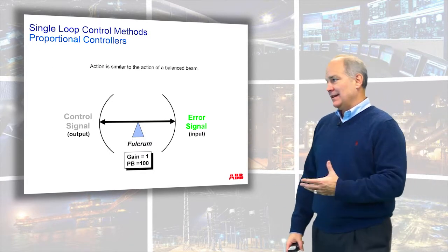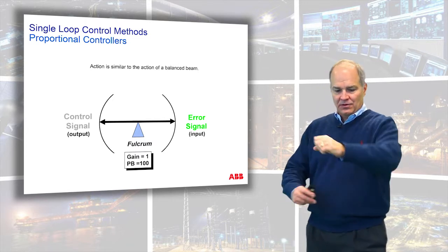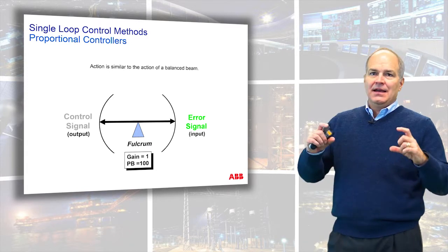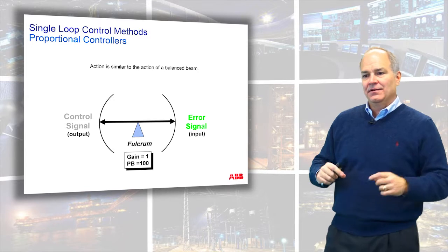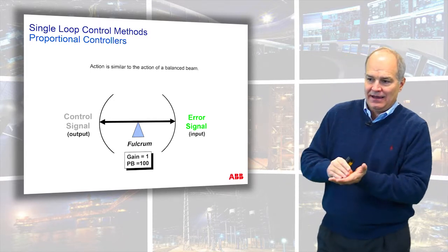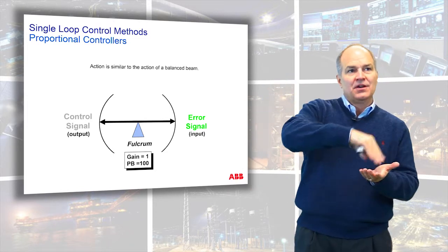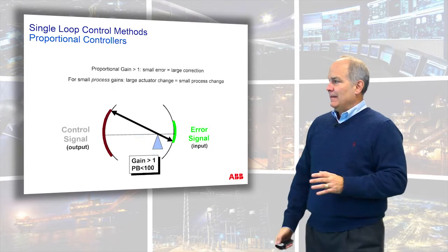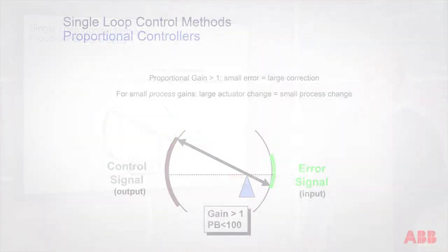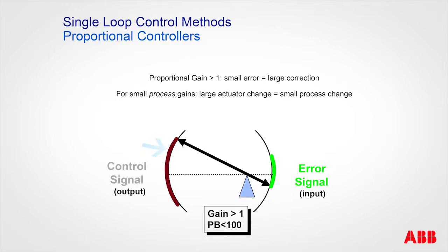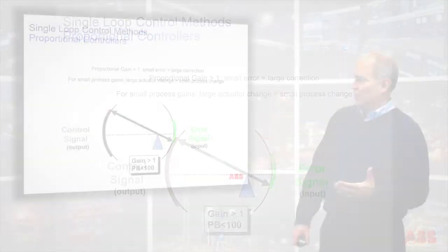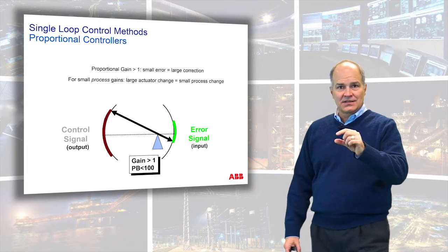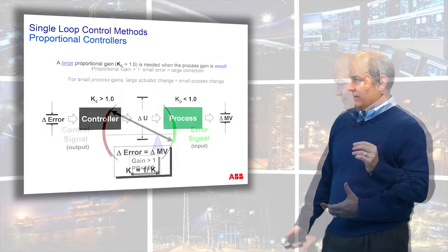The teeter-totter analogy really helped me understand the fulcrum and pivot point, where the pivot point is your gain. With a gain of one, or a proportional band of 100, a 100% change in error produces a 100% change in output — they're matched. If the gain is greater than one, the error doesn't have to move very much and the output moves a lot, like a large actuator that produces only a small process change.